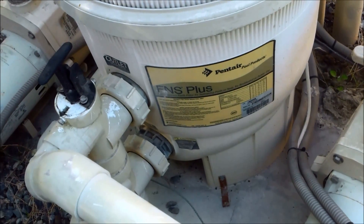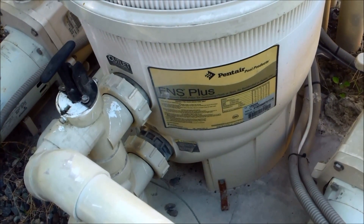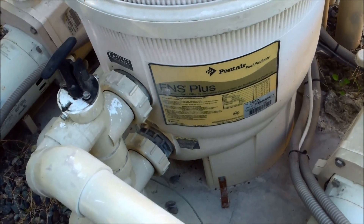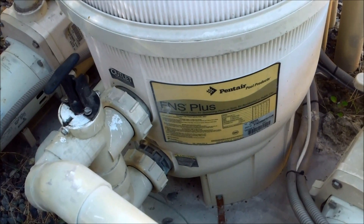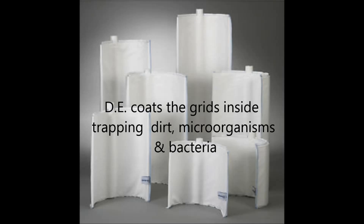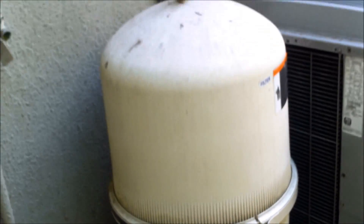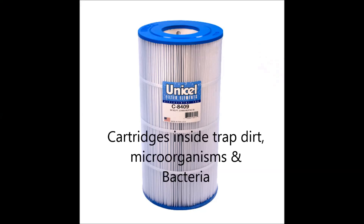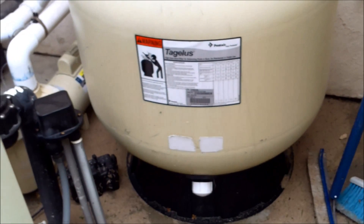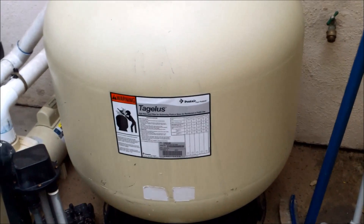There are basically three types of filters: a diatomaceous earth (DE) filter like this one here, a cartridge filter, and a sand filter. Here's a Clean and Clear Plus cartridge filter by Pentair, and this is your standard sand filter you're going to find installed at your house.